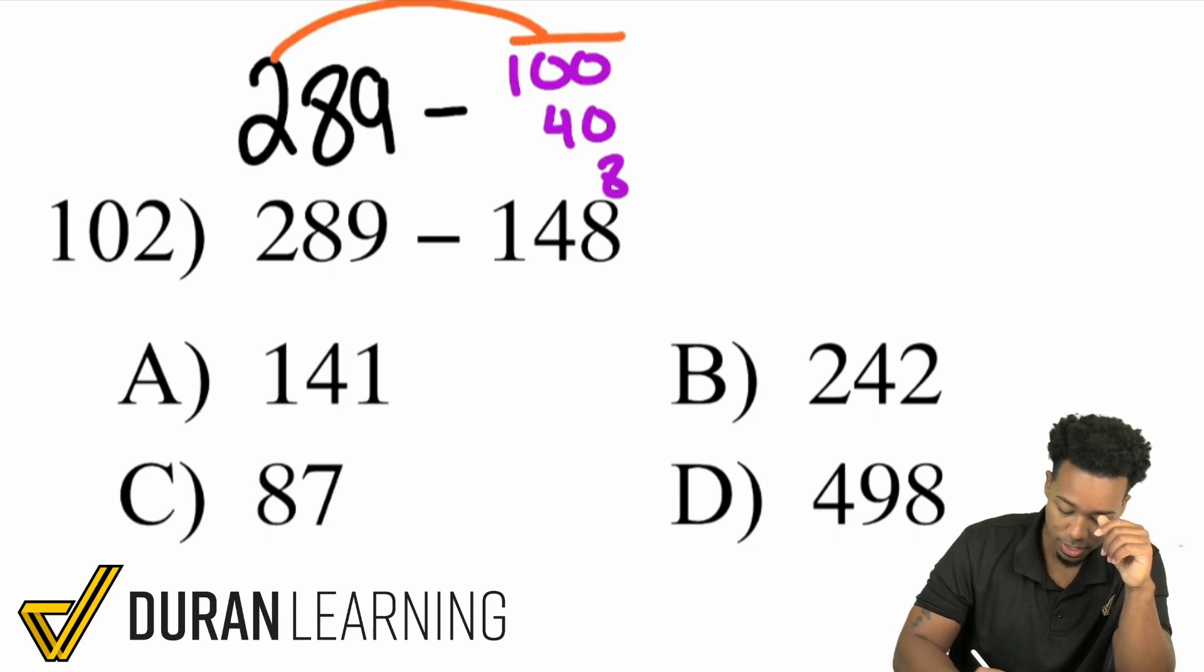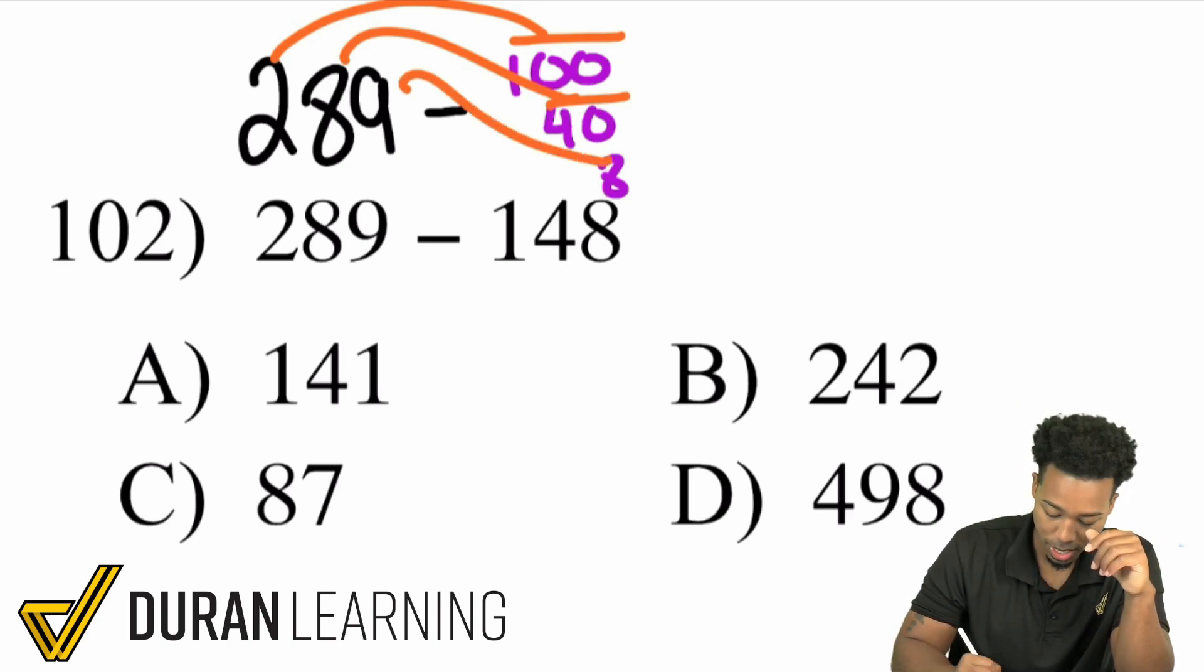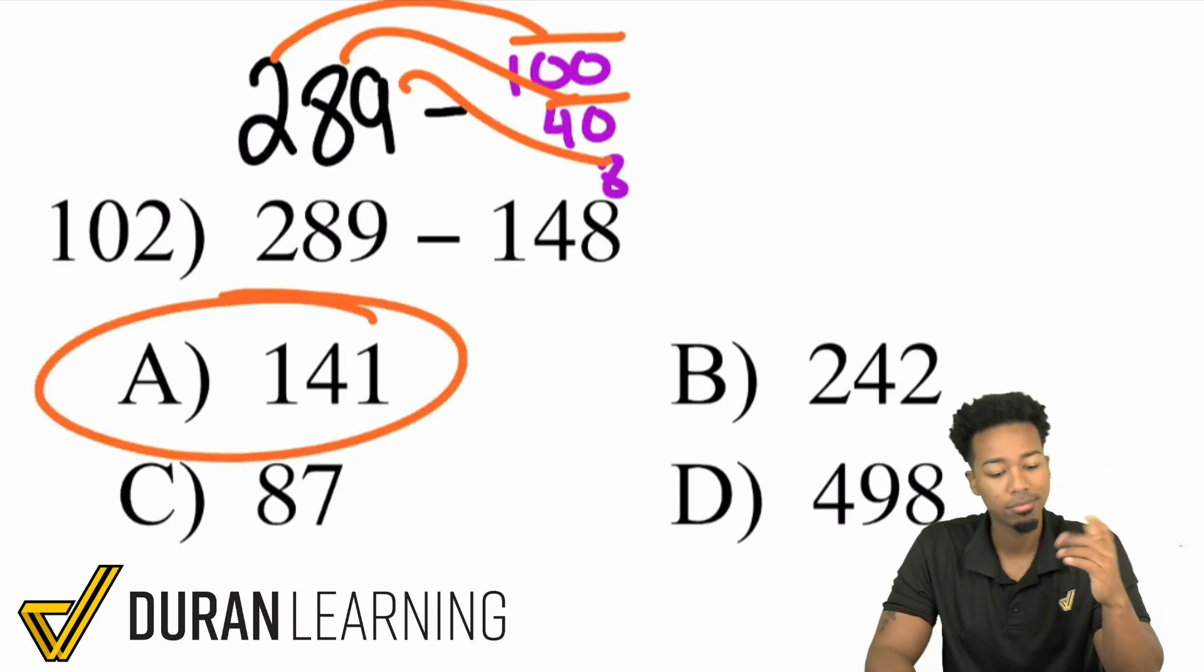So again yeah take away the 100 to get 189. Take away 40 149 take away 8 141. Nice and easy. Nice and easy.